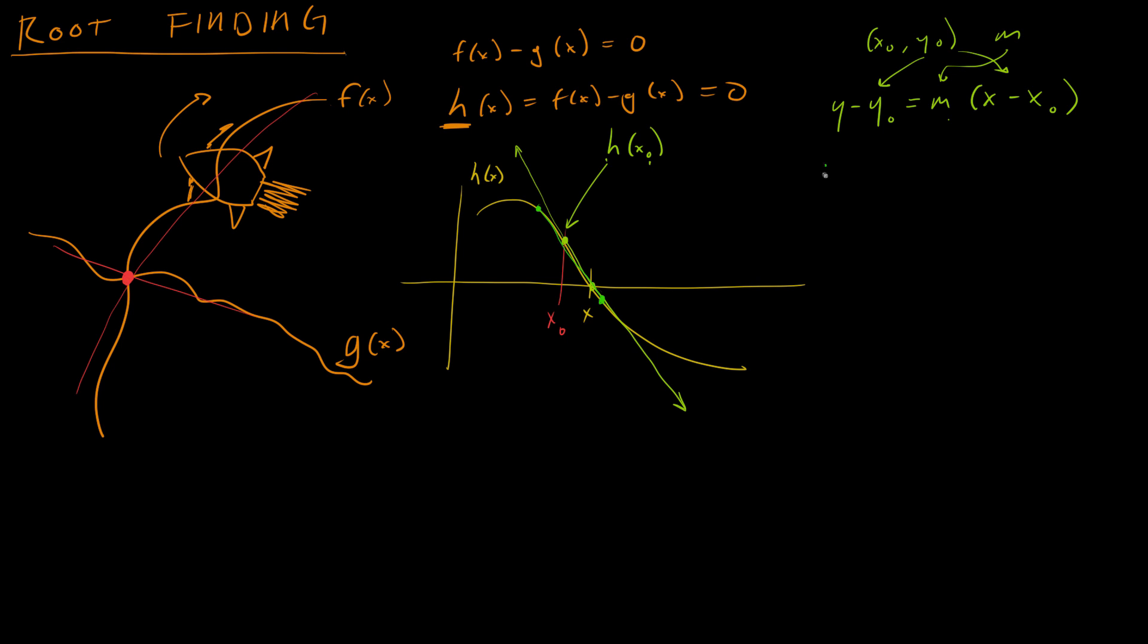Okay, so I'm going to rewrite this function now, this formula right here. h(x naught) equals h prime, that is the derivative or the tangent, the slope of the tangent line, at the point x naught, times x minus x naught.